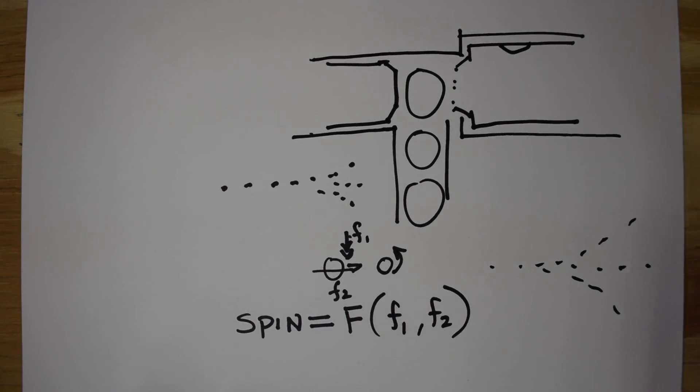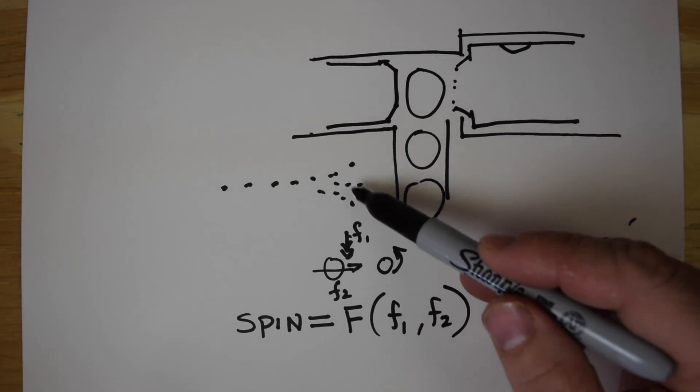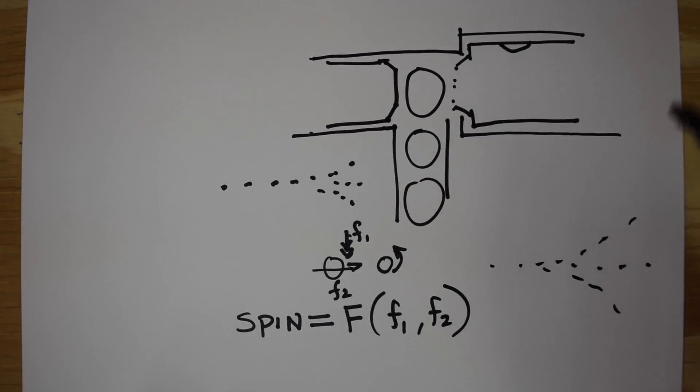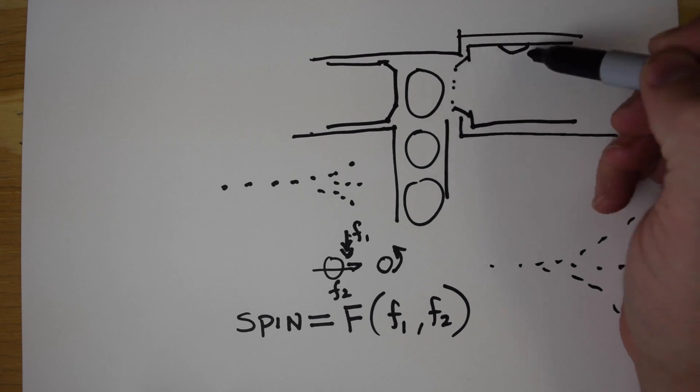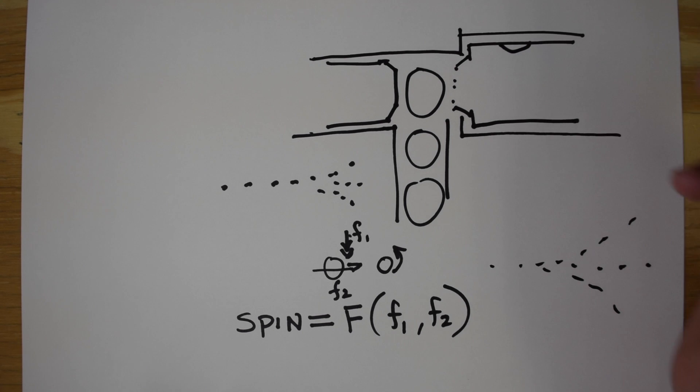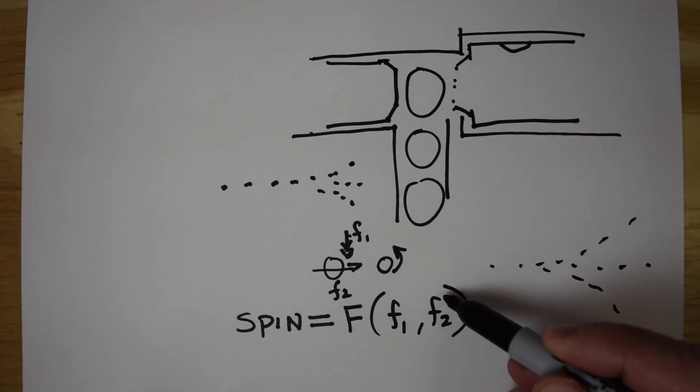So, this is basically the hop-up. When you're seeing inconsistent amounts of hop, generally what is happening is you're pushing the BB past the bucking with different amounts of speed.